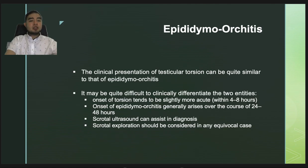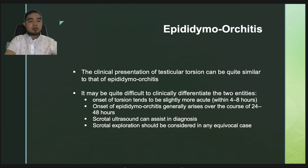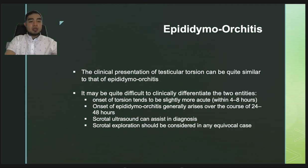The clinical presentation of testicular torsion can be quite similar to epididymo-orchitis, making differentiation difficult. The onset of torsion tends to be more acute — within four to eight hours — whereas epididymo-orchitis generally arises over 24 to 48 hours. Scrotal ultrasound can assist in diagnosis, but in severe orchitis, testicular flow can be compromised, raising concern for torsion. Scrotal exploration should be considered in any equivocal case, as missed torsion can result in testicular loss secondary to necrosis.